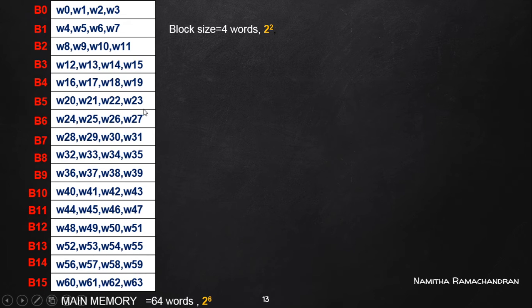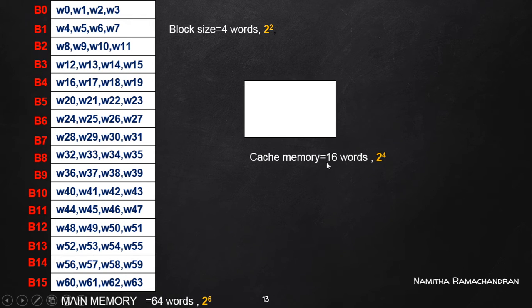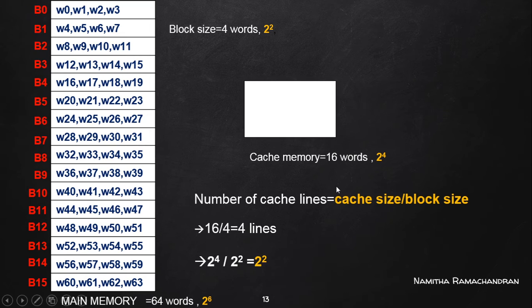Now we can consider the next type of memory, which is the cache memory. The cache memory is always smaller in size compared to the main memory. Here the cache memory size is assumed to be 16 words, meaning this cache memory can hold a maximum of 16 different words at a time.